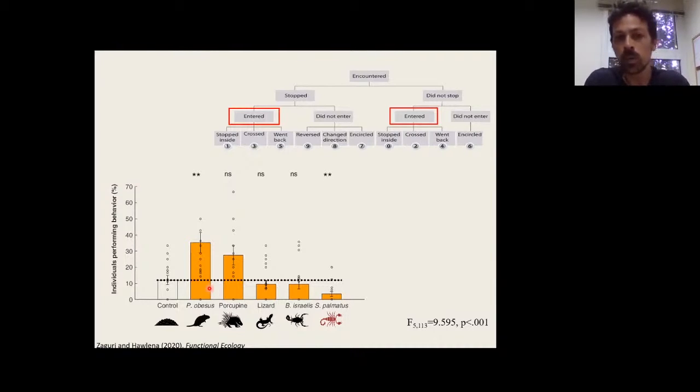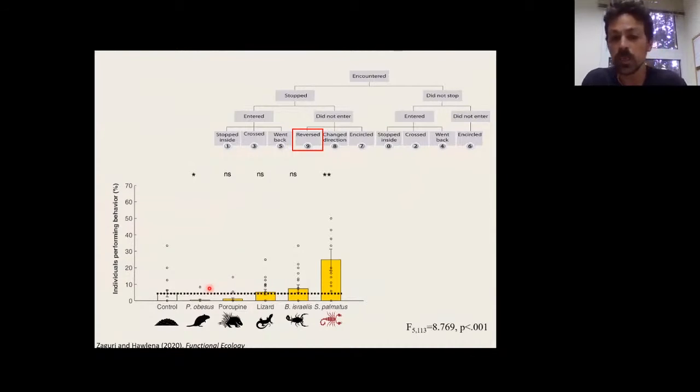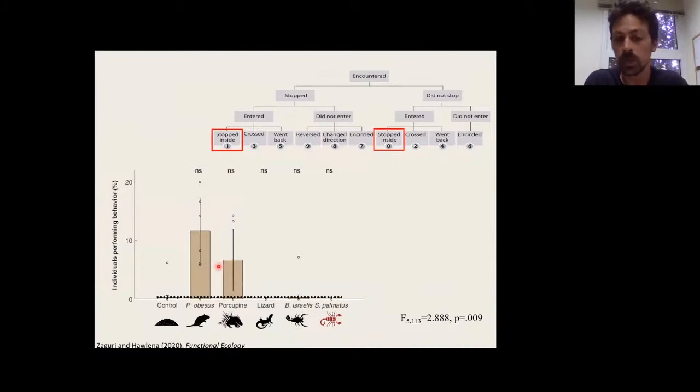If we look on entry, we see that the odors of the predatory scorpion decreased this behavior because increasing the probability it was created by the scorpion. These two insectivores had no effect, they were really similar to the control, and these two herbivores increased the tendency of the isopod to climb on the mound, to enter into the treatment. This is actually the first evidence of the use of safety cues, because what we're seeing here is that they reduce their defensive responses, which we believe is because of reducing the risk estimation. Now let's look on two terminal behaviors. First, the most extreme one, the most anti-predatory behavior, the reversing. Here again, the odors of the predatory scorpion increased their tendency to use this behavior. The two insectivores were again, just as the control, and the two herbivores decreased this tendency. The porcupine was not significant, only the fat sand rat.